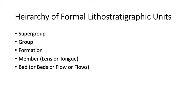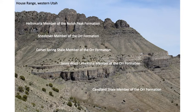Slide 8 shows an example photo from west-central Utah. At the very bottom is the Kanland Shale Member of the Ore Formation, above which is the Johns Wash Limestone Member of the Ore Formation, then the Corset Spring Shale Member of the Ore Formation, and lastly the Sneak Over Member of the Ore Formation.